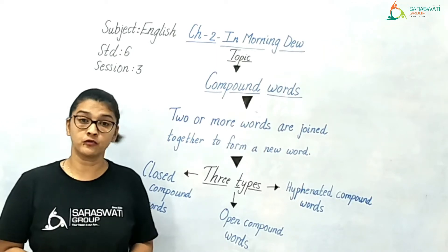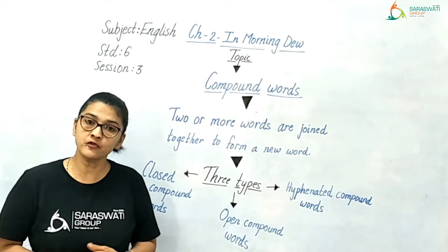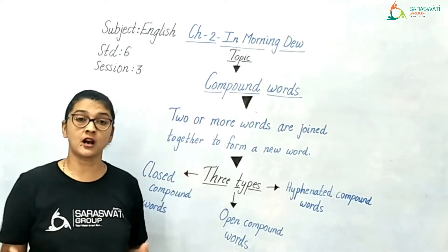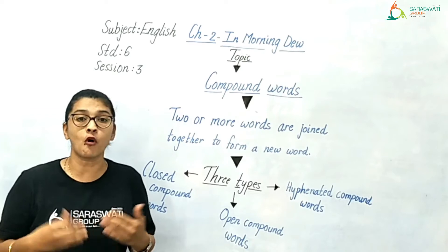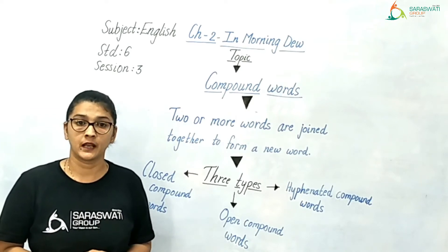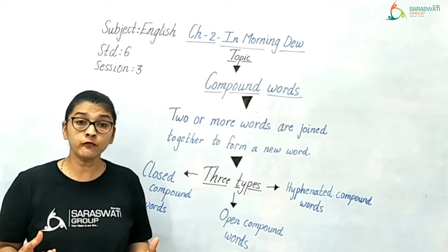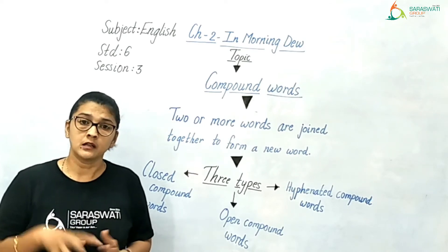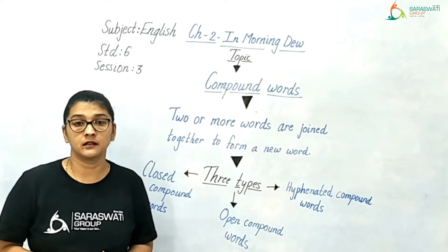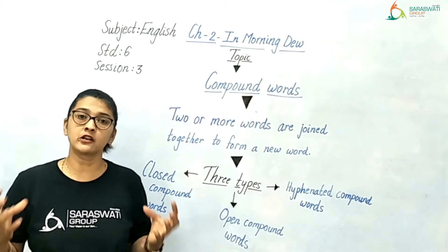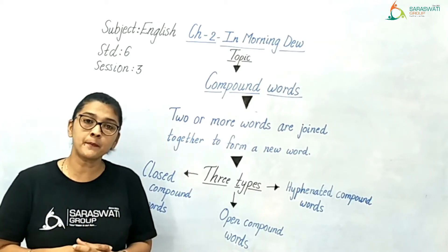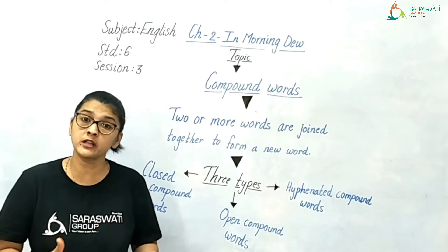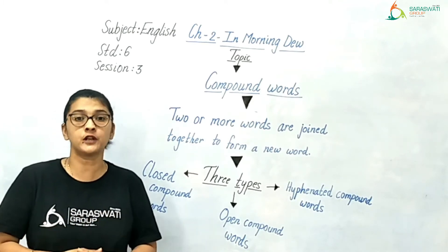What are compound words? Compound words are two or more words which are joined together to form a new word. The words which are joined have their own meaning, but when they are joined together and clubbed up, they construct a new word and that new word has a different meaning.